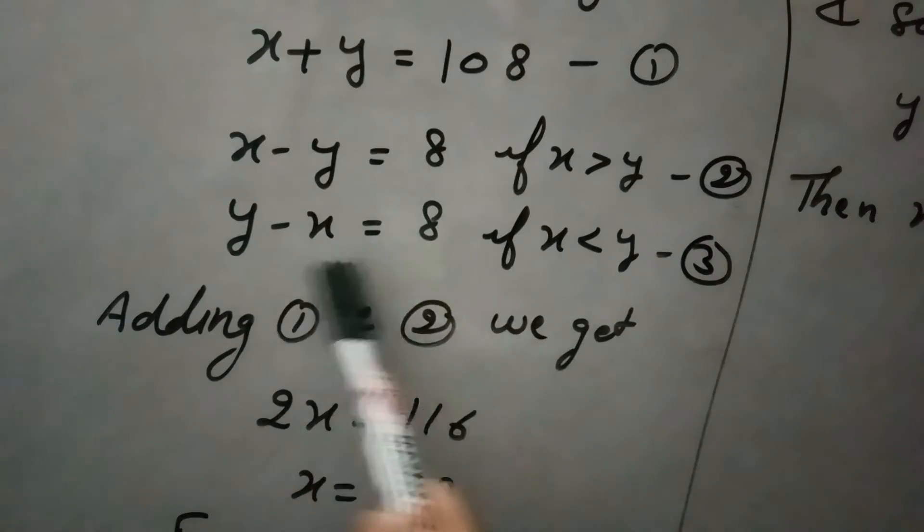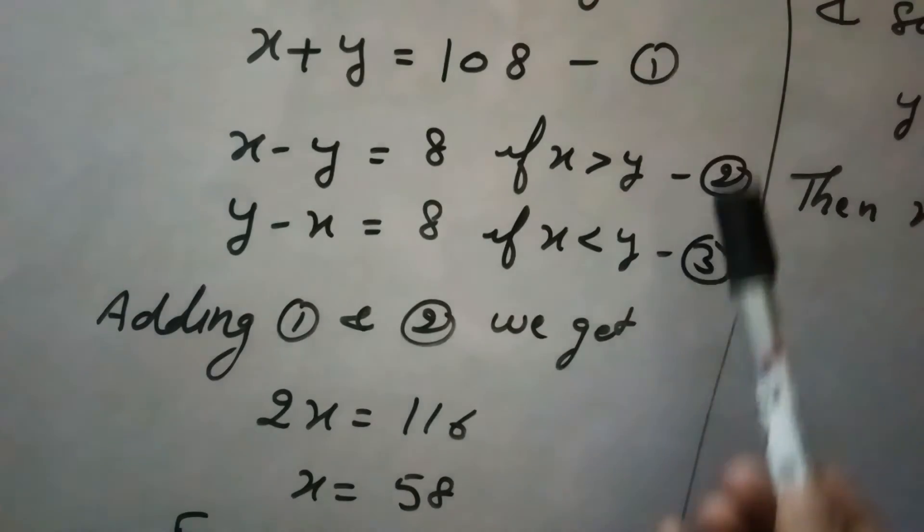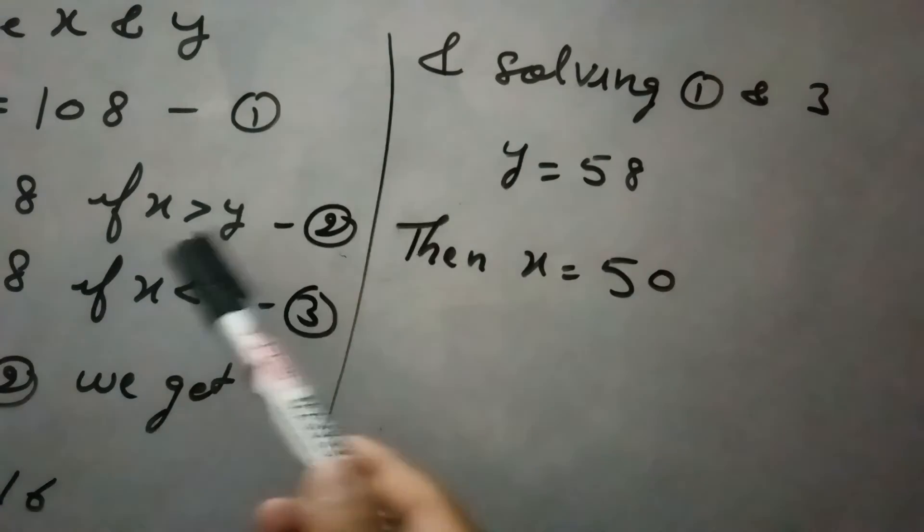if we take the second case when y is greater than x, then solving equation 1 and 3, we will get y is 58, and substituting this value of y in any of the equations, we will get x equals 50.